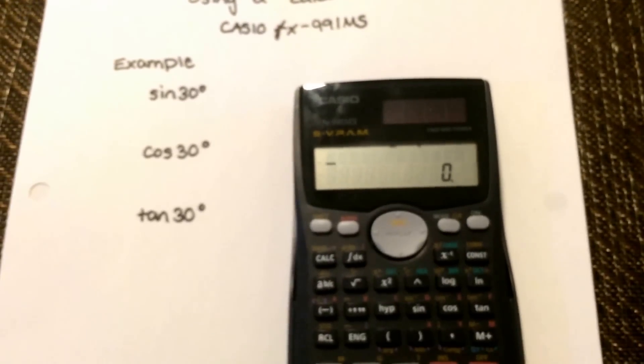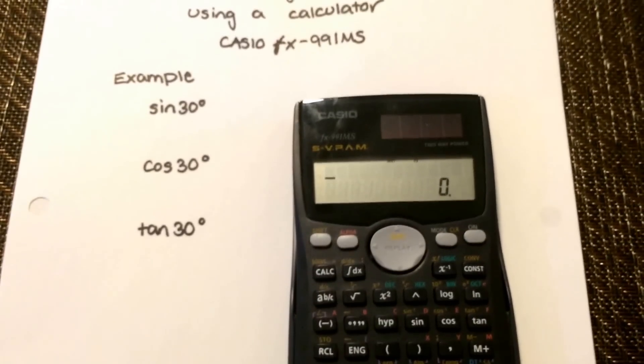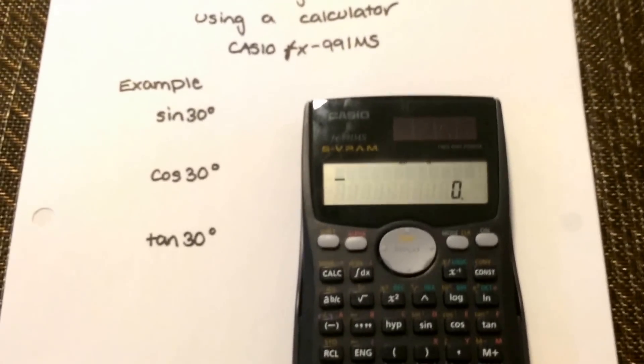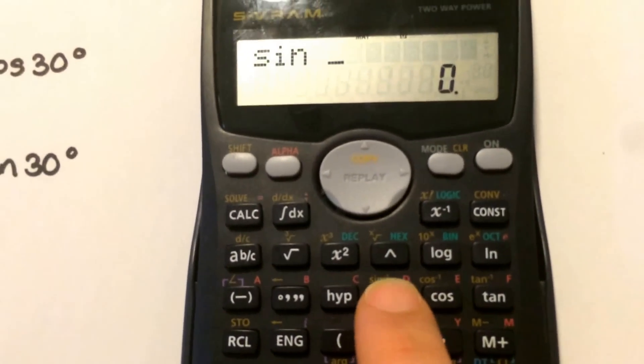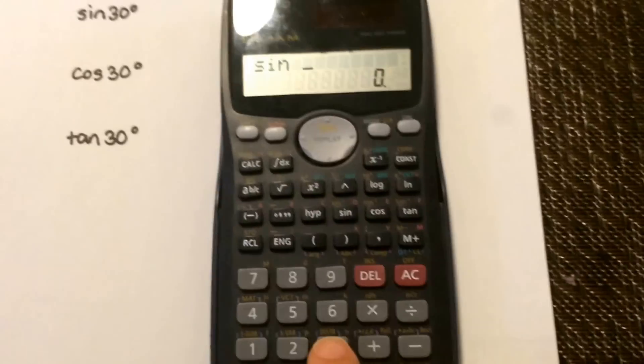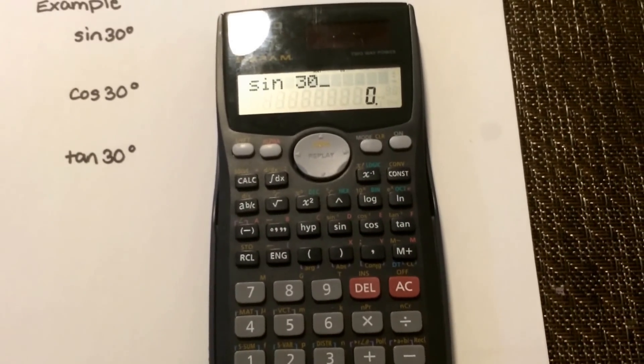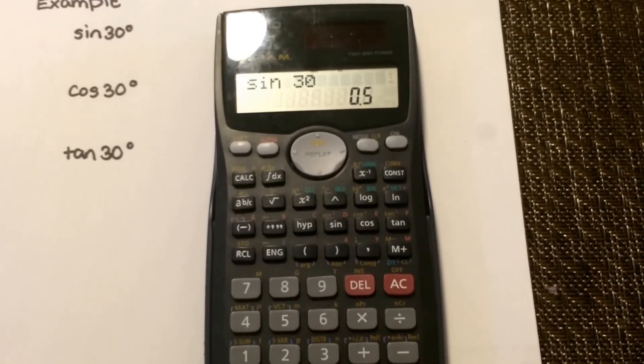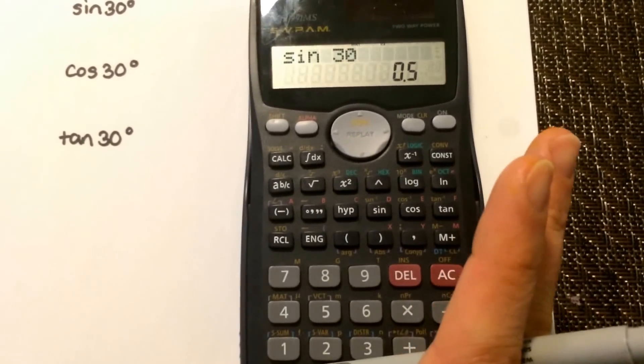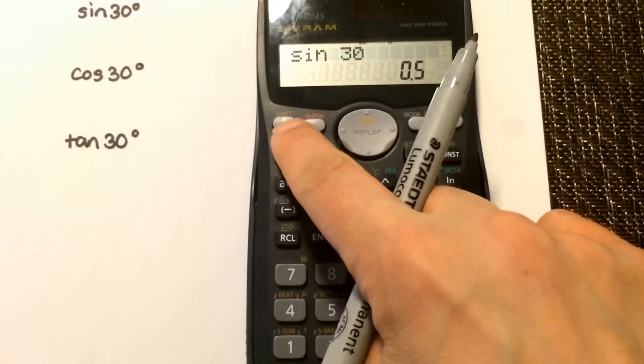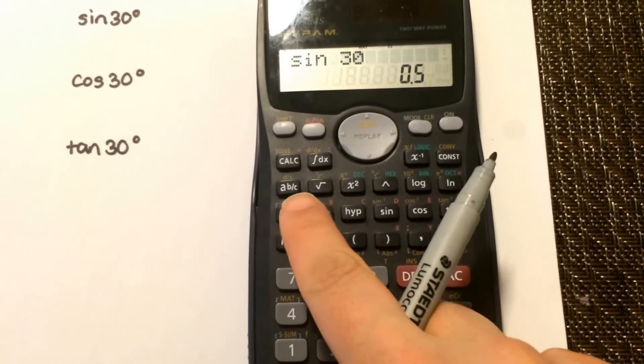So it's quite simple to actually calculate the ratios. For sine of 30 you're gonna simply go to sine and enter 30 and then hit equals and it'll tell you it's 0.5. If you want to switch that into fraction, you just simply go second function, this one here, so it'll tell you it's 0.5.